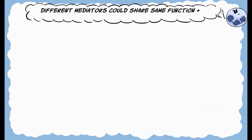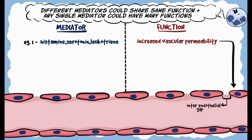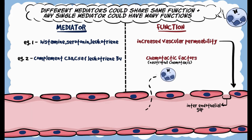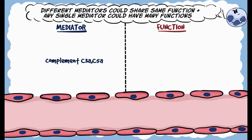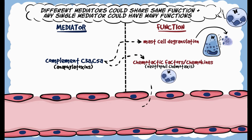Different chemical mediators could share the same function, and any one chemical mediator could have more than one function. Mediators like histamine, serotonin and leukotrienes could all cause an increased vascular permeability of the blood vessels. Also, complement proteins like C3A, C5A and leukotriene B4 are chemotactic factors that help recruit neutrophils to the site of inflammation — different mediators sharing the same function. Complement proteins like C3A and C5A, besides being anaphylotoxins stimulating mast cell degranulation, are also chemotactic factors helping attract neutrophils to the site of inflammation — the same chemical mediators having two different functions.